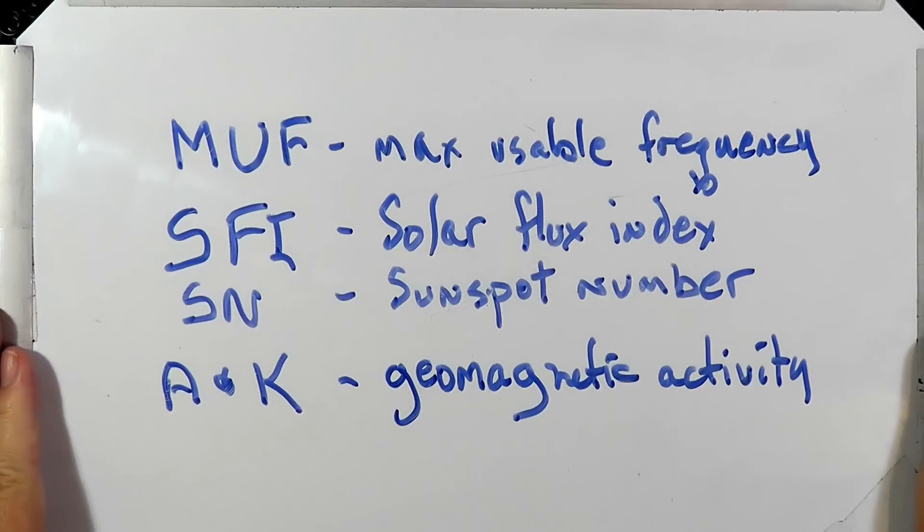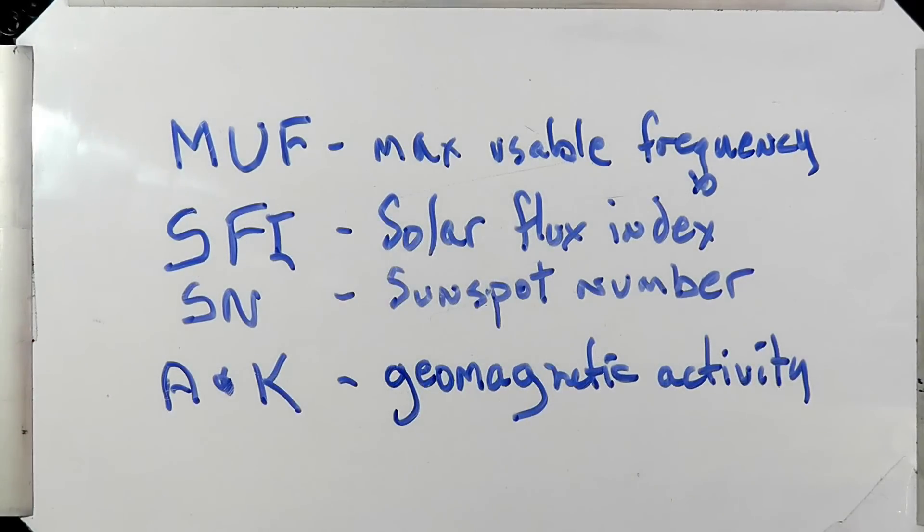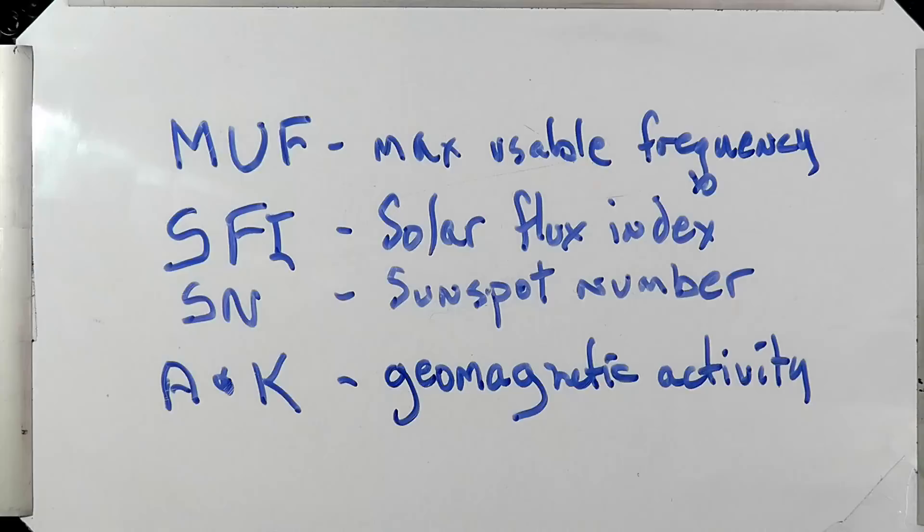So we're going to take a look at some things here. I want to get the definitions out. The MUF, or MUF, is the maximum usable frequency. This is the frequency above which a signal hitting the ionosphere will just pass through. Below that number, signals will be reflected. The MUF varies a bit depending on the angle. When propagation is good, the MUF goes higher, so we can use higher frequencies for HF communications.